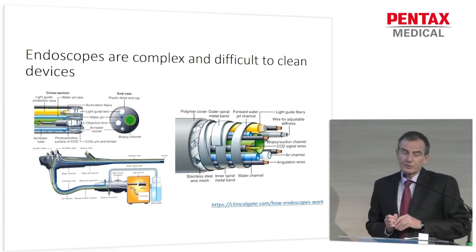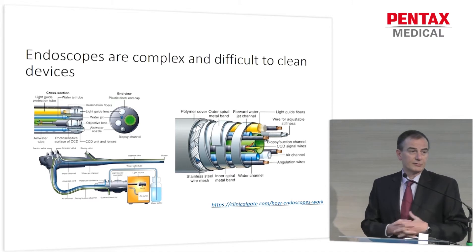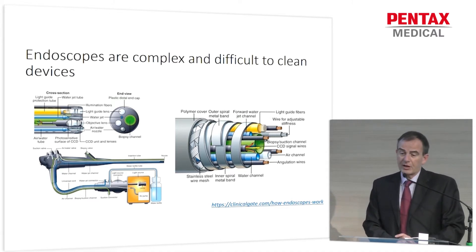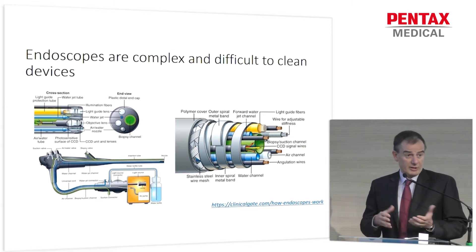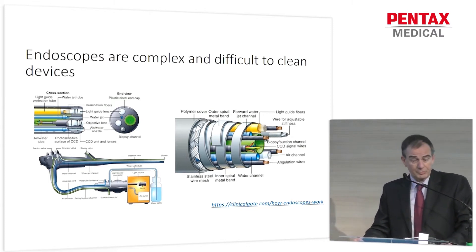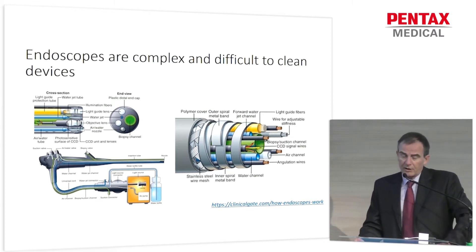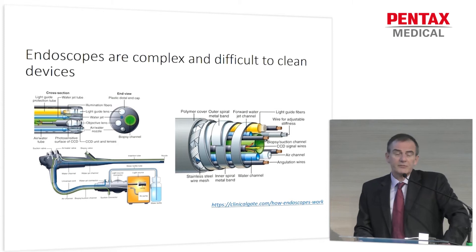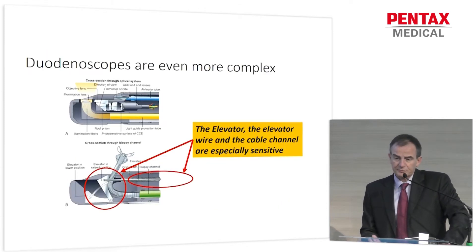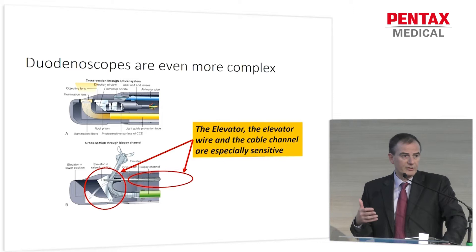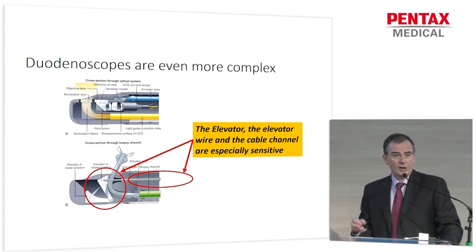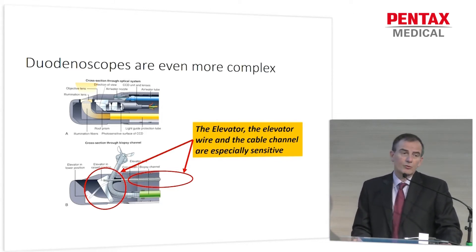As you all know, endoscopes are complex devices due to their numerous internal parts and channels, and for this reason they do not accept autoclaving and are difficult to clean. Duodenoscopes are even more complex because of the presence of the elevator and the wired channel, which are very sensitive parts, even more difficult to clean.